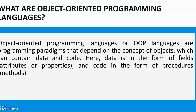Now let's talk about the other concept called object-oriented programming languages. There are a lot of object-oriented programming languages like Java and various others. What is an object-oriented programming language or OOP concept? Object-oriented programming languages are languages that depend on the concept of objects, which contain data and code. An object consists of both data and code. Data is in the form of attributes or properties, and code is in the form of methods. The executable part is in the form of methods, procedures, or functions. Data is generally declared as attributes, variables, or properties.